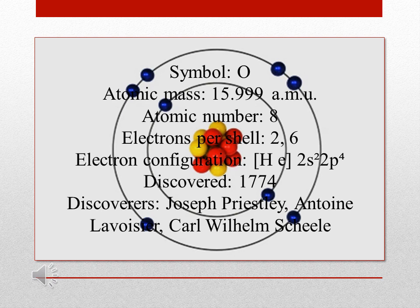He 2s squared 2p4, discovered 1774, discoverers Joseph Priestley, Antoine Lavoisier, Carl Wilhelm Scheele.